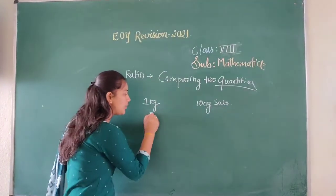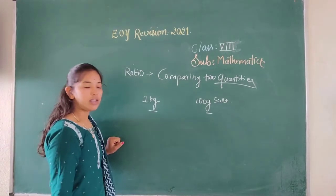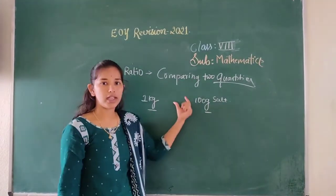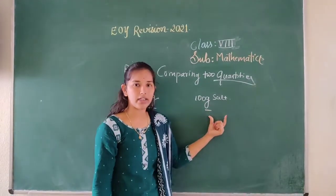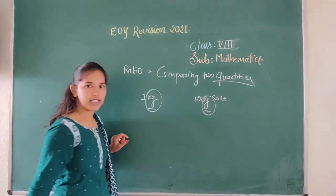But we are going to compare. This will not become a ratio. If we are going to do the ratio of 1 kg and also 100 grams, it will not become a ratio because the dimensions are not same.